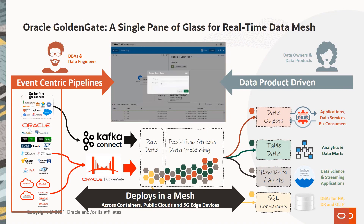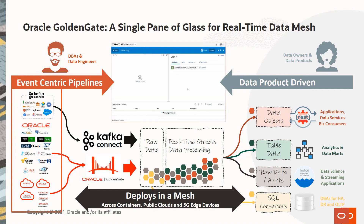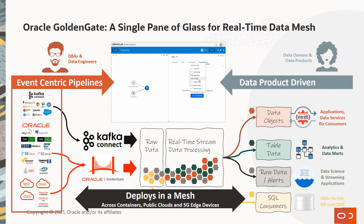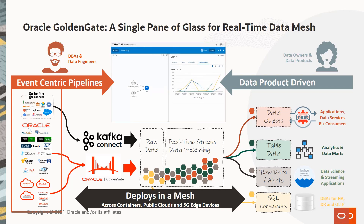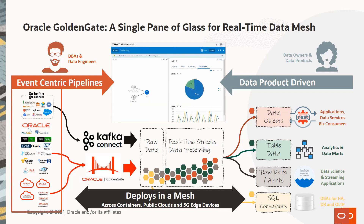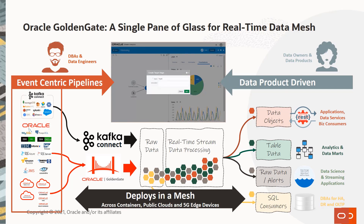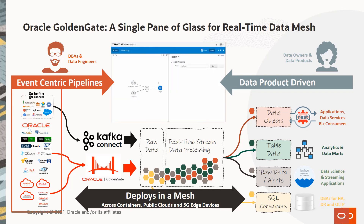Many customers are successfully using Oracle GoldenGate and Stream Analytics today for building a real-time data mesh. Users take advantage of GoldenGate's distributed microservice architecture with its intuitive user interface for initiatives spanning application modernization like shift to cloud, data availability and integration, event sourcing, data pipelines, streaming ingest, and streaming analytics — all over a single pane of glass, as seen in the top middle.